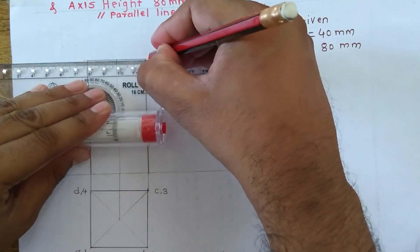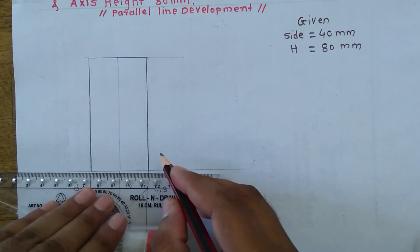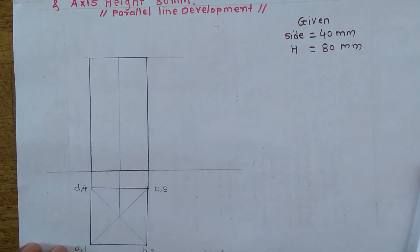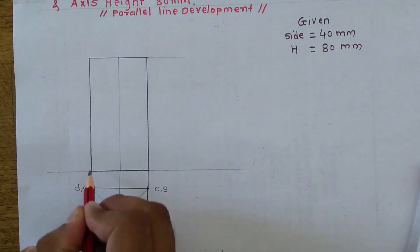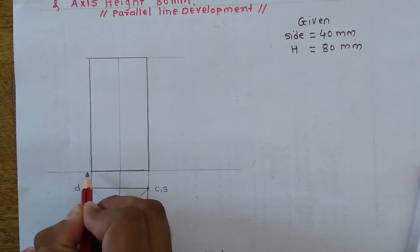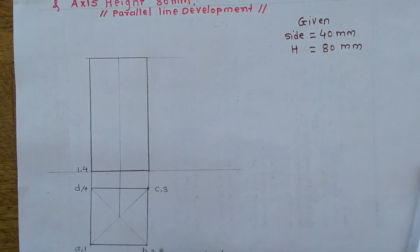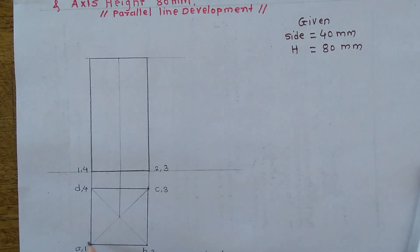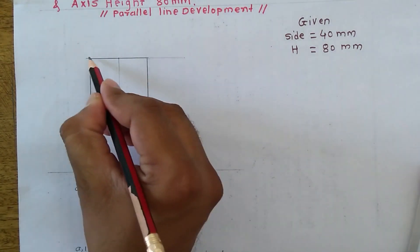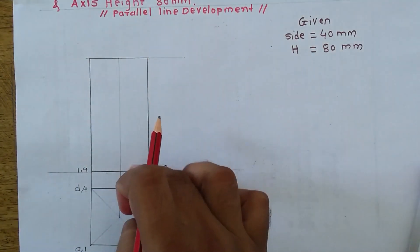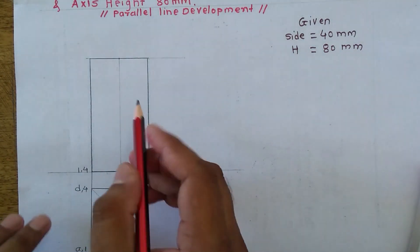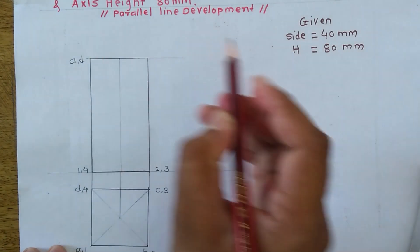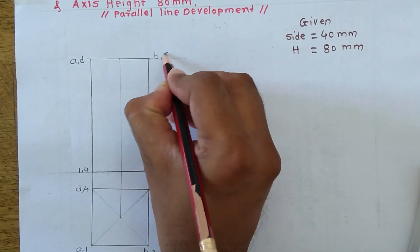Now our front view is almost completed. We have to give naming to the front view. The projection of 1 and 4 is coming here at the bottom, so this will be 1,4. The projection of 2 and 3 will be here. The projection of AD is coming here because at the top and bottom there is a square cross section. I will give naming A, D here and naming B and C here.